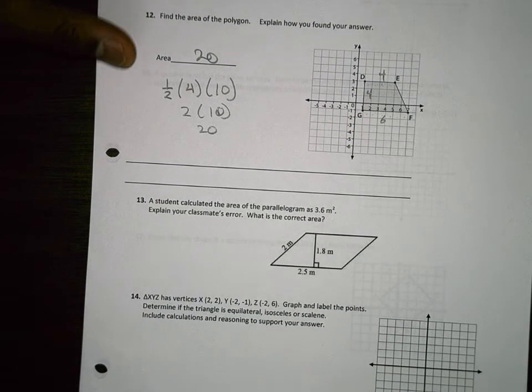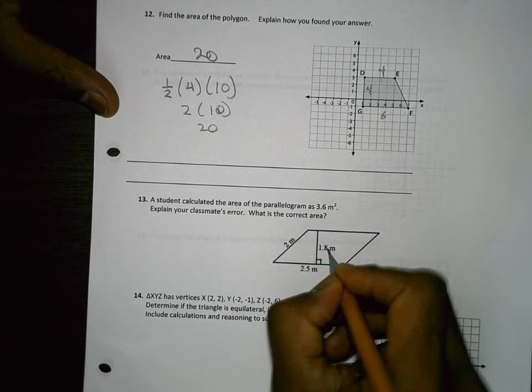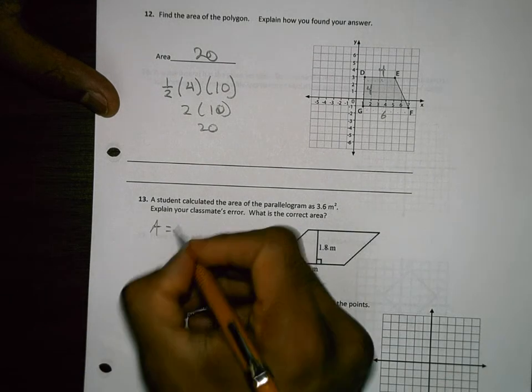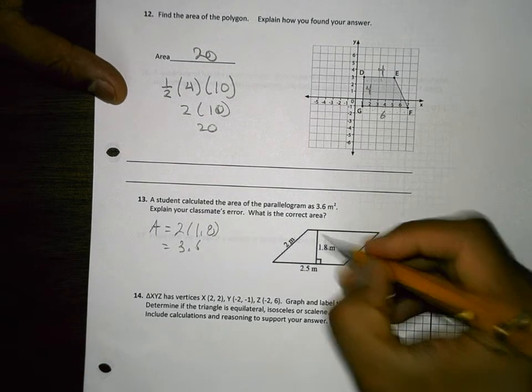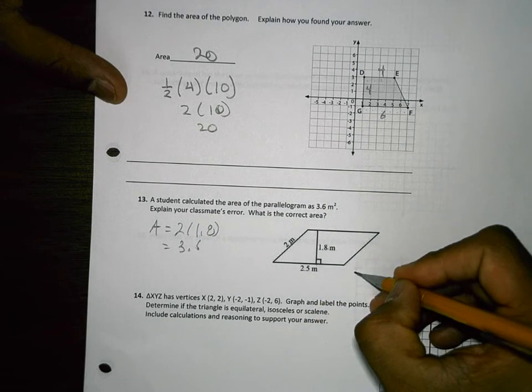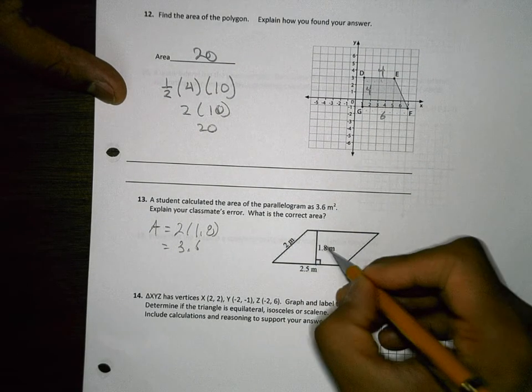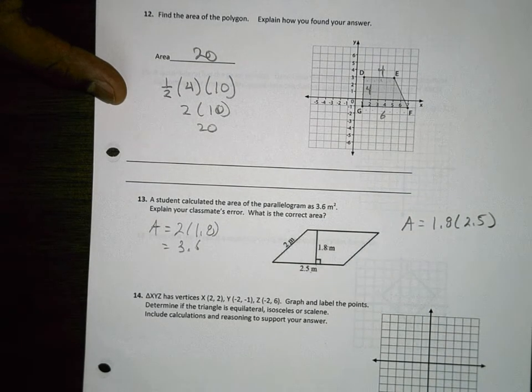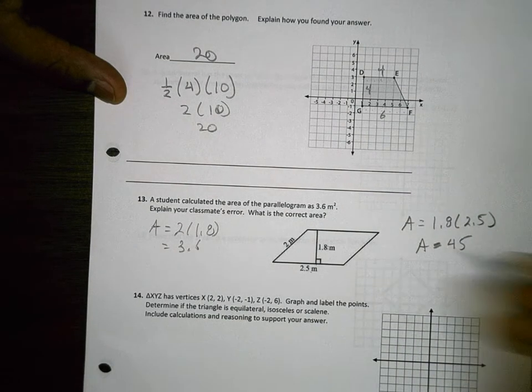The student calculated the area of a parallelogram and explained the mistake. So they got 3.6 by multiplying 1.8 times 2, and they're saying that's wrong. The reason is the height that you use has to be connected to the base. So this height of 1.8 goes to this base of 2.5. So this should have been multiplied by that. The correct answer is 1.8 times 2.5, and the area is 4.5. The mistake is they multiplied the wrong sides.